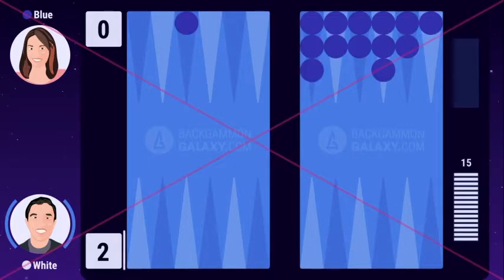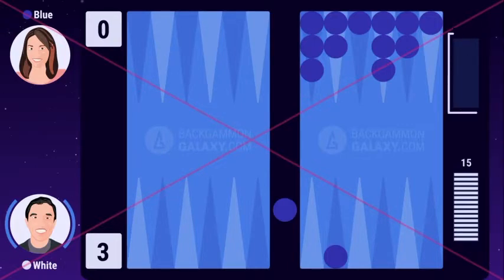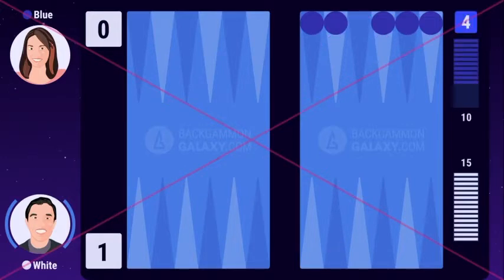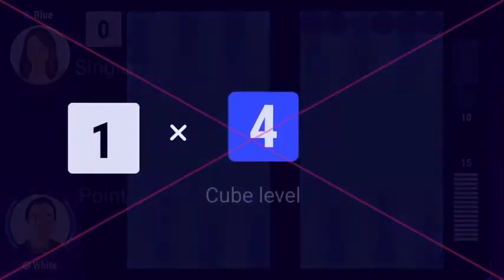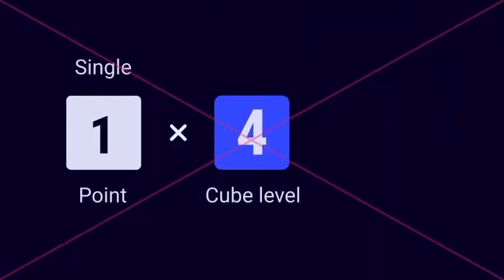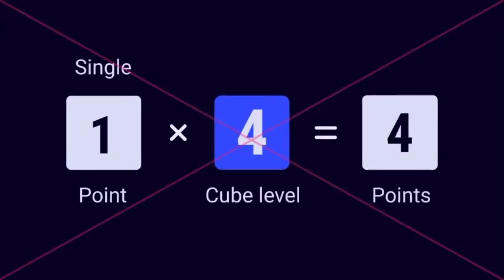Gammon, 2 points, is when you have borne off all your checkers and your opponent hasn't borne off any checkers. Backgammon, 3 points, is when you have borne off all your checkers and your opponent hasn't borne off any checkers and still has one or more checkers on the bar or in your home board. In this example of white vs blue, the cube has a value of 4, as it was used twice during this game. White multiplies the 1 point from winning a single with the value of the cube. 1 times 4 equals 4 points, which is the final score of the game.